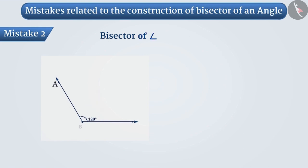For instance, to find the bisector of angle ABC, students make such an arc which intersects BC at D and AB at E.